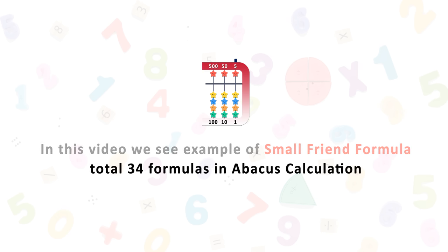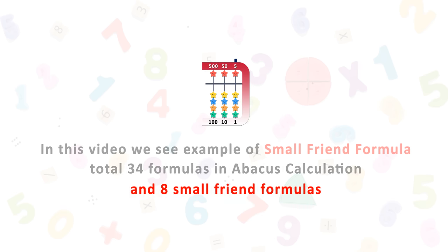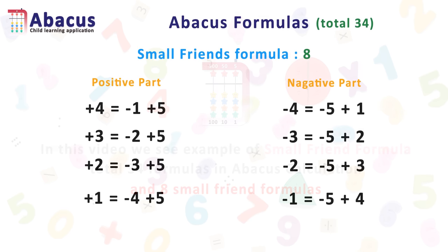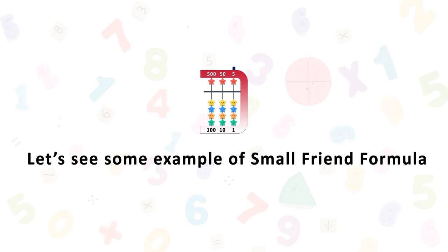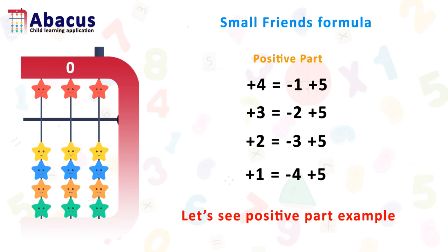In this video we see examples of small friend formulas. In the previous video we saw there are a total of 34 formulas in Abacus calculation and 8 small friend formulas — all 8 small friend formulas. There are 4 positive part formulas and 4 negative part formulas. Let's see some examples so we get a better idea. First we see examples of the positive part.